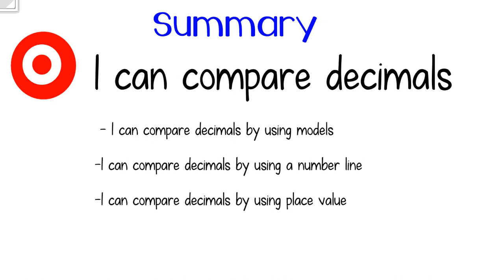Today we talked about how you can use different strategies to compare decimals. We used three strategies: a model, where you shade in the different amounts; a number line, where the number further to the right is the larger number; and stacking numbers using place value to compare. Check yourself to see if you met today's learning targets, and head to Google Classroom to do today's practice. See you later, bye!